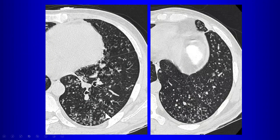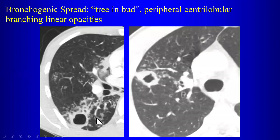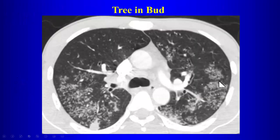The classic CT appearance from bronchogenic dissemination is tree-and-bud — branching opacities with centrilobular nodules that do not touch the pleural surfaces. TB is the classic cause, but any bronchiolitis or bronchogenic dissemination of infection can give tree-and-bud nodules. Always think about TB and atypical mycobacteria when you see tree-and-bud.